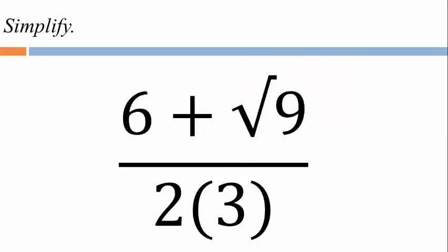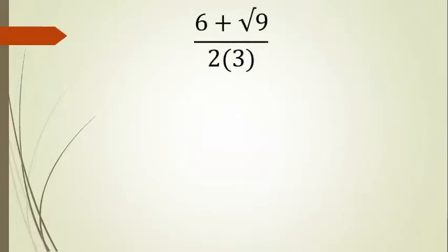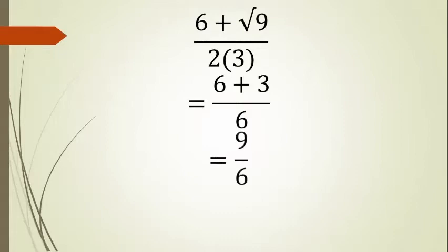Simplify (6 plus square root of 9) over (2 times 3). The square root of 9 is 3, so that is 6 plus 3 over 6, which gives us 9 over 6. Simplified, we have 3 over 2, or three halves.